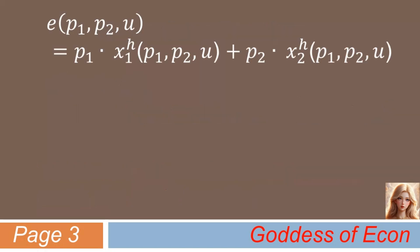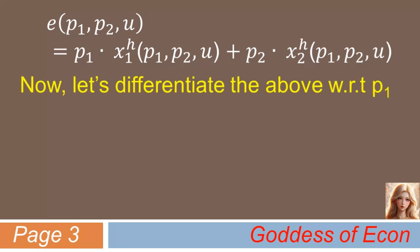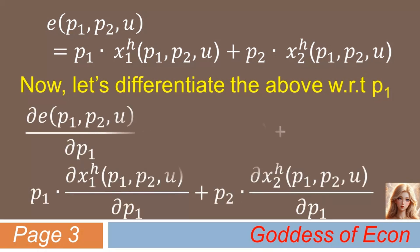Now, given the following definition of the expenditure function, let's differentiate both sides of the equation with respect to p1. Then we have: partial derivative of the expenditure function with respect to p1 equals the Hicksian demand function for good 1, plus p1 times the partial derivative of the Hicksian demand for good 2 with respect to p1.